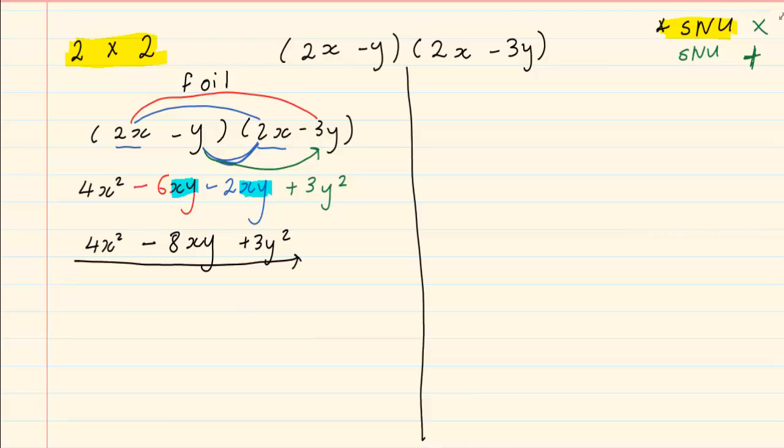The second method to do 2x2 binomials is to use the method called kitty cat. Again we have a binomial with two terms in each bracket. 1, 2, 1, 2, 1, 2.